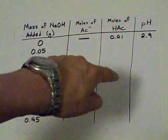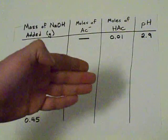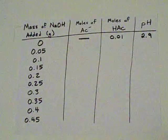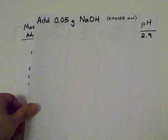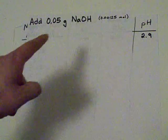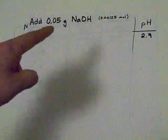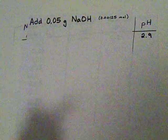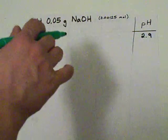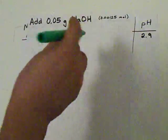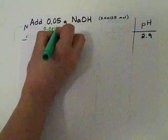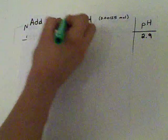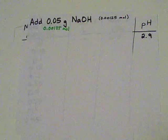And I did my own little equilibrium ICE table to figure out what the pH of that solution is. It's 2.9. Here's the deal. We're going to add 0.05 grams of NaOH to this solution. If you do mass divided by molar mass kind of things, you realize that this is 0.00125 moles of NaOH. What does that mean?